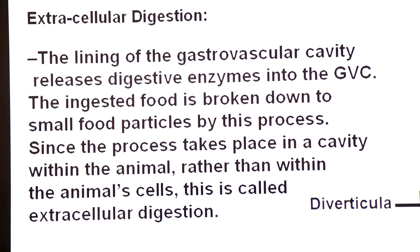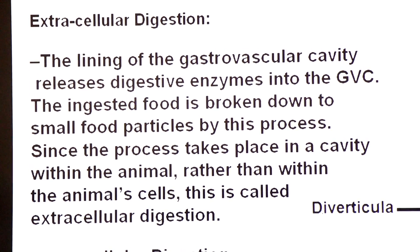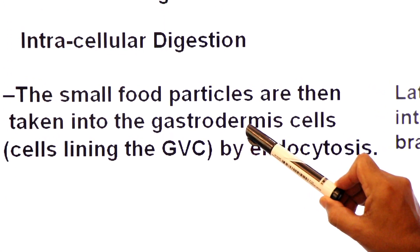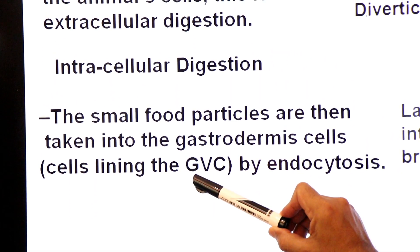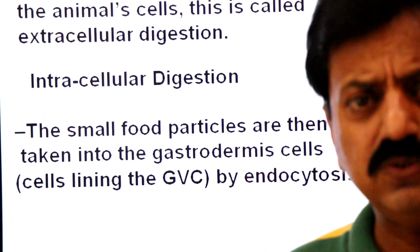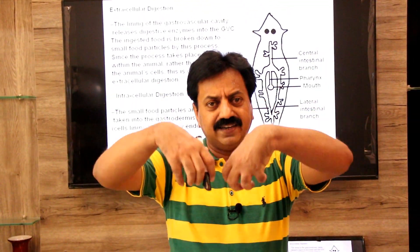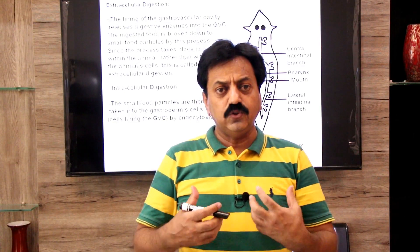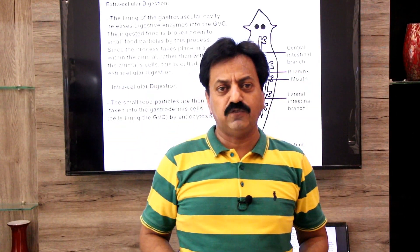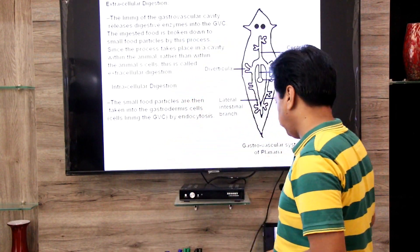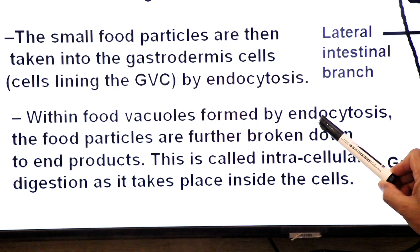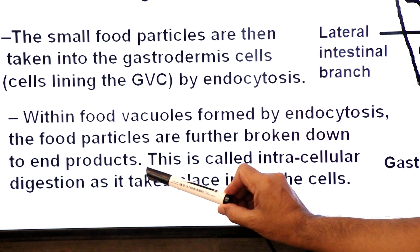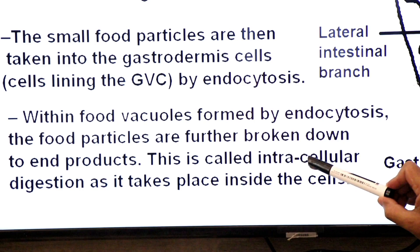After this partial extracellular digestion, intracellular digestion occurs. The small food particles are then taken into the gastrodermis — the inner layer — by a process called endocytosis, also called phagocytosis. The food particles are further broken down inside the cells into end products such as amino acids, fatty acids, and so on. This is called intracellular digestion.